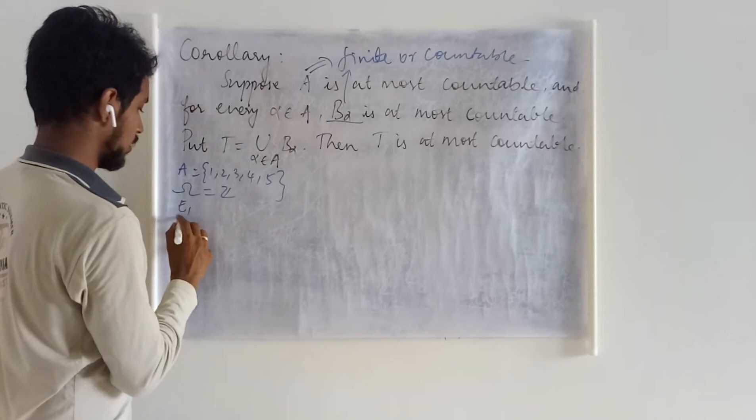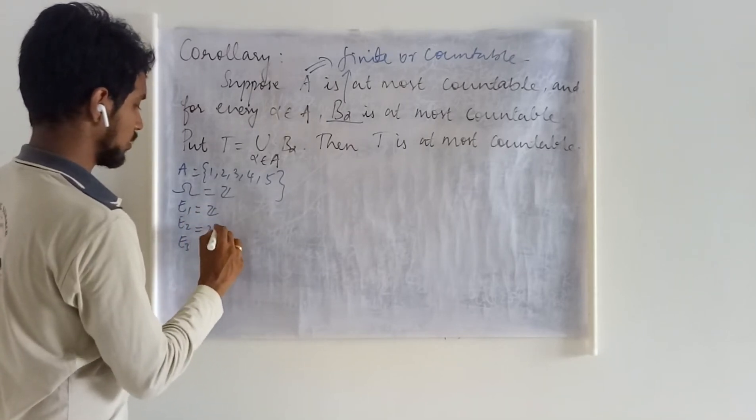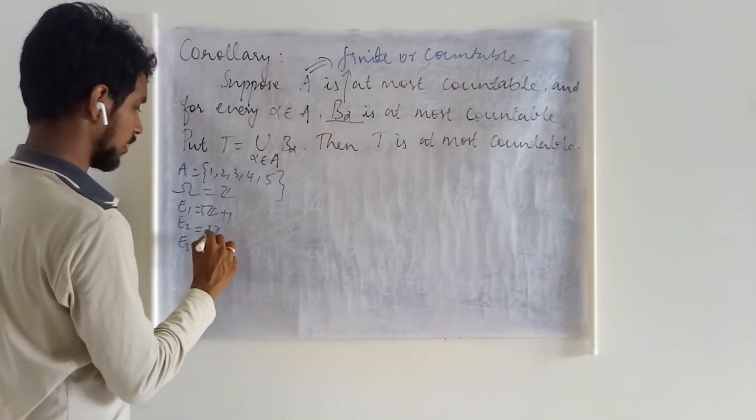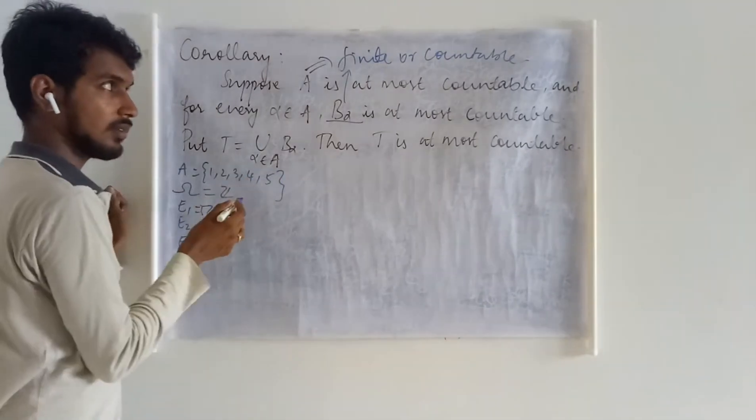And we have written down these things: Z, 2Z, and eight of this thing are 5Z plus 1, 5Z plus 2, all those things. This was the finite set.